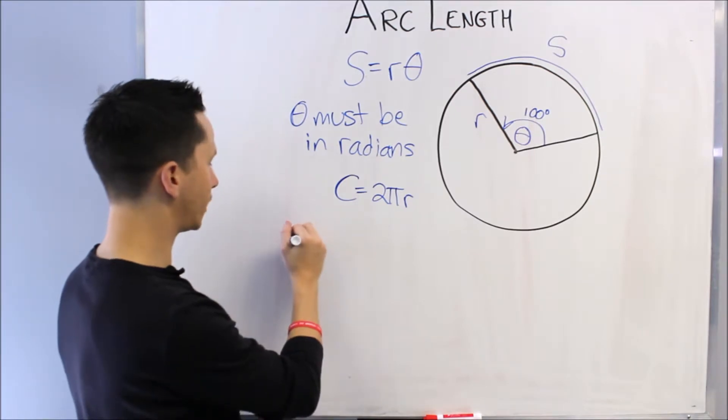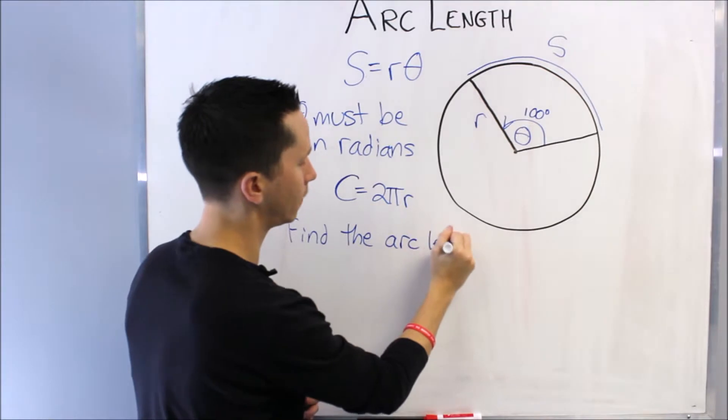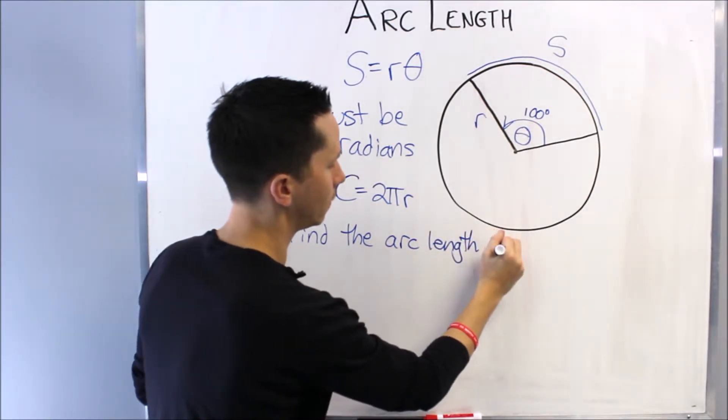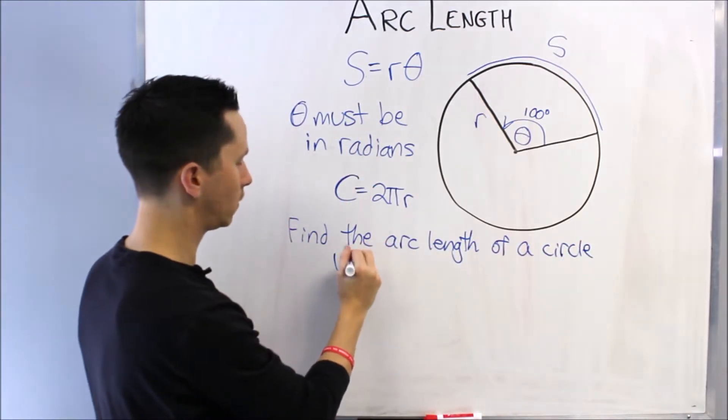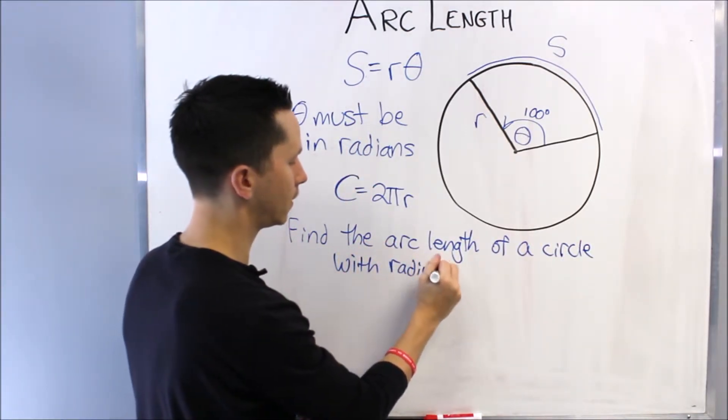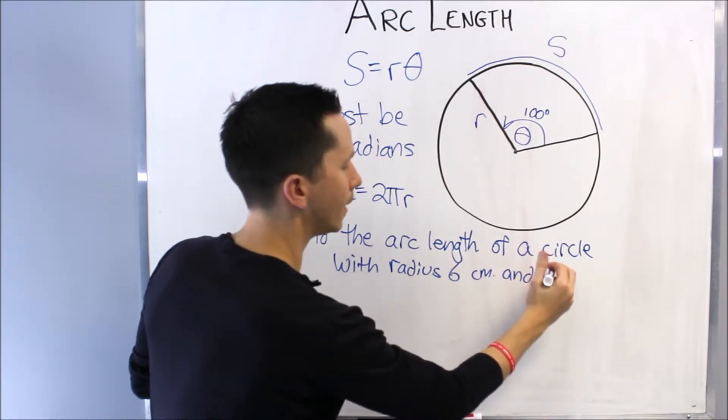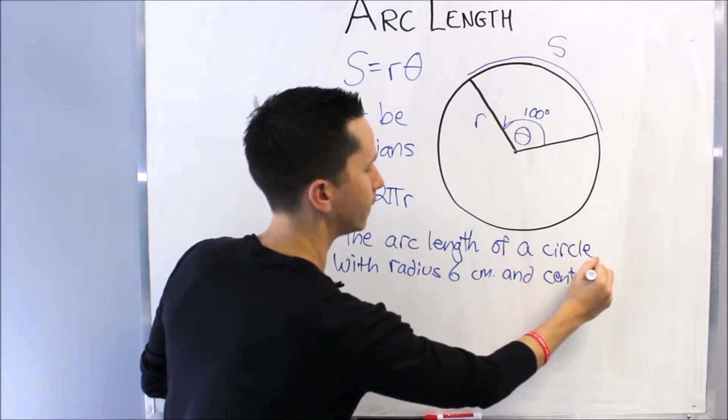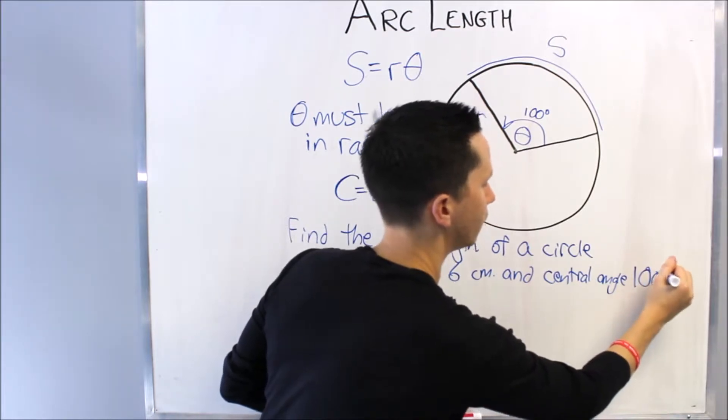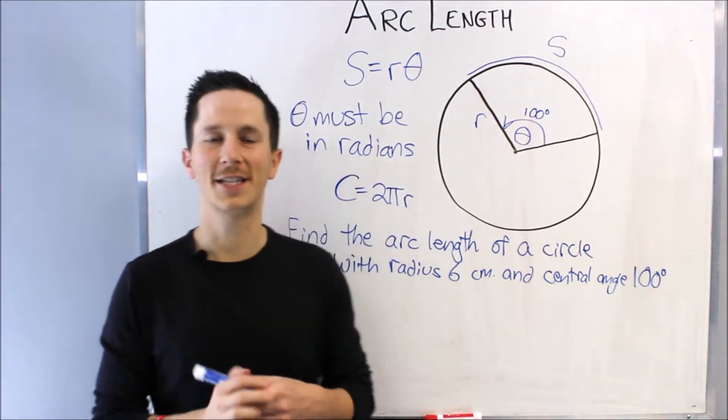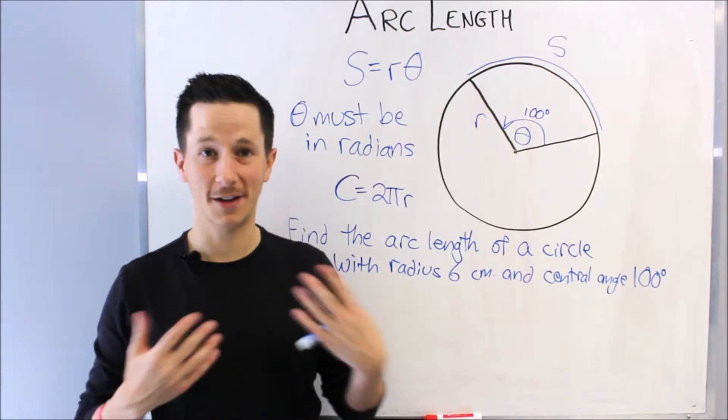So let's just do a quick example. Find the arc length of a circle with radius 6 centimeters and central angle 100 degrees. So take a second, try and use the formula as we know, and pause the video, try yourself, and then we'll move ahead.